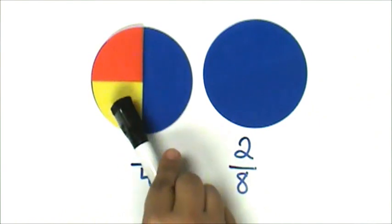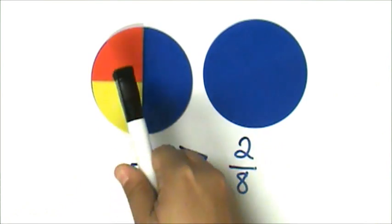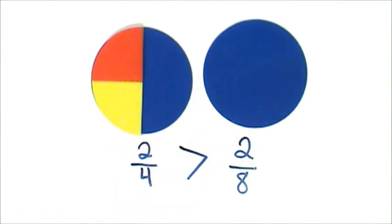I can see that two-fourths is greater than two-eighths. And that means two-eighths is less than two-fourths.